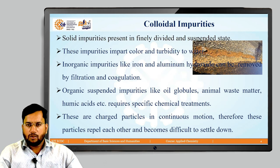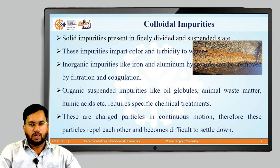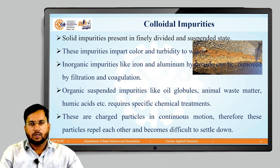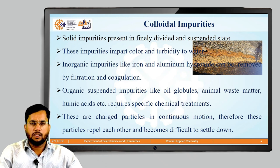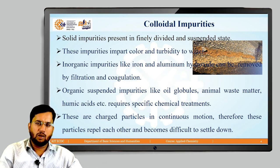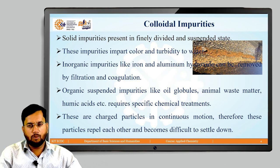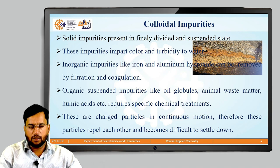Colloidal impurities are generally difficult to remove as they are charged particles always in continuous motion, making it difficult to settle them. Colloidal impurities are solid impurities present in a finely divided and suspended state, and they impart colour and turbidity to water. Ionic impurities like iron and aluminium hydroxide can be removed by filtration and coagulation, whereas organic colloidal impurities like oil globules, animal waste matter, and humic acid require specific chemical treatment.